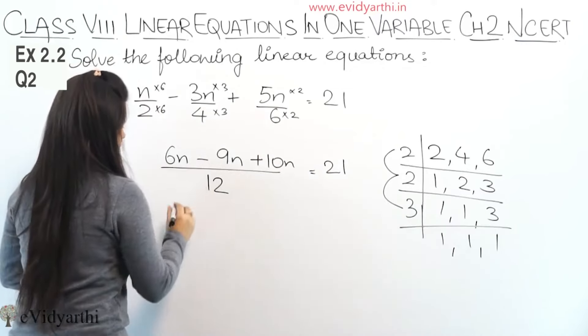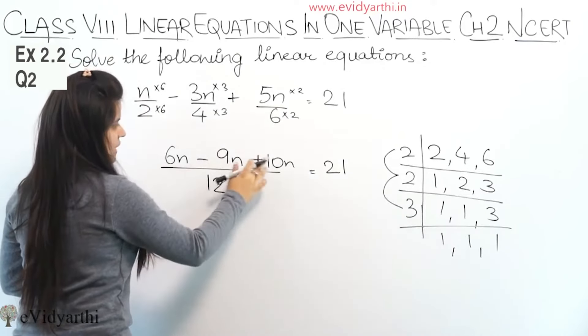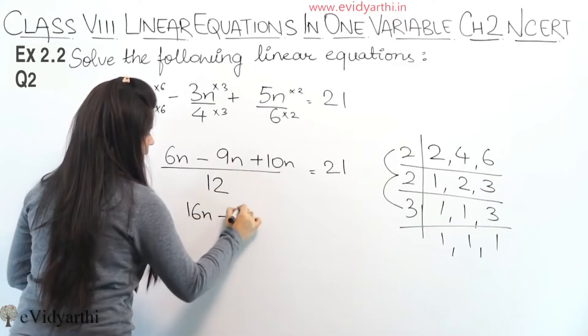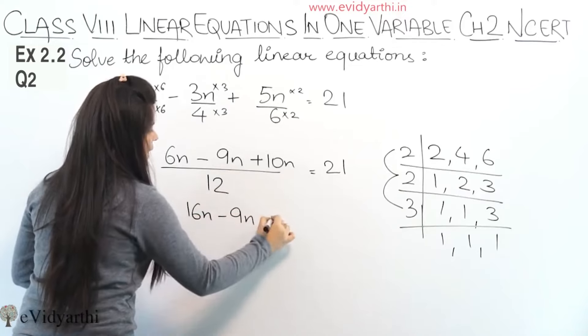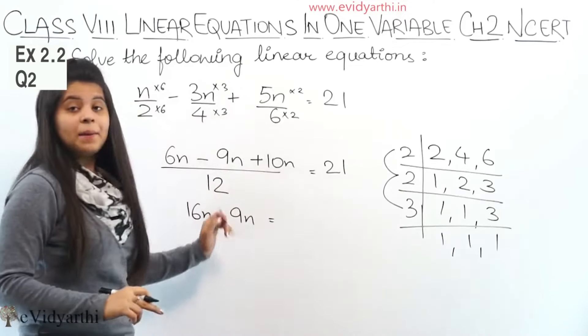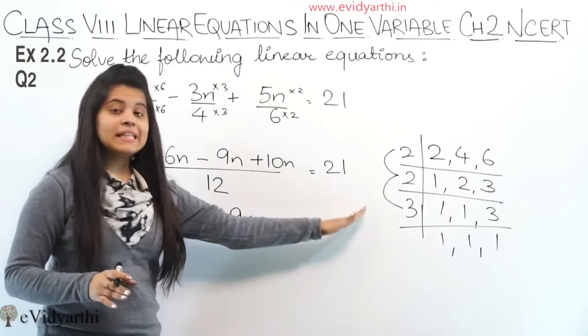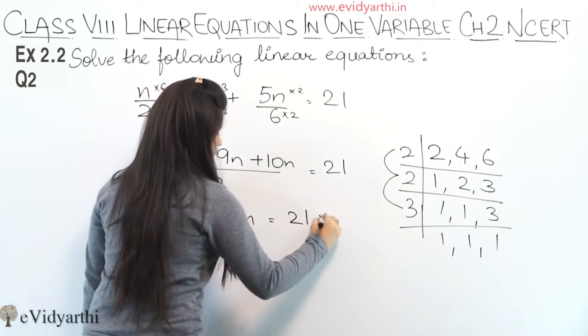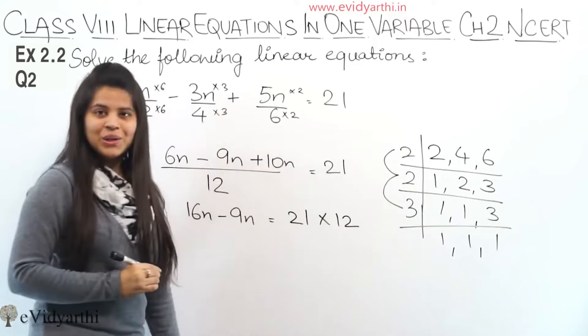Now, 6n. Now 10 plus 6 is 16n minus 9n. Now here is 12. We have divided here, we will multiply here. So 21 into 12.